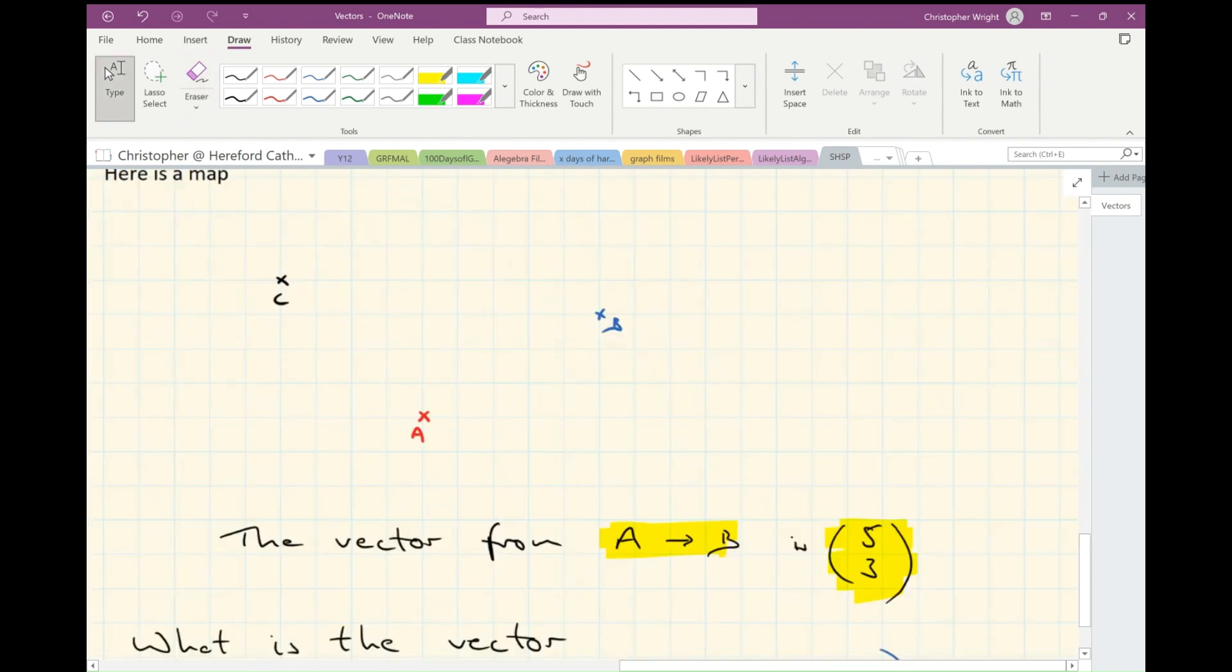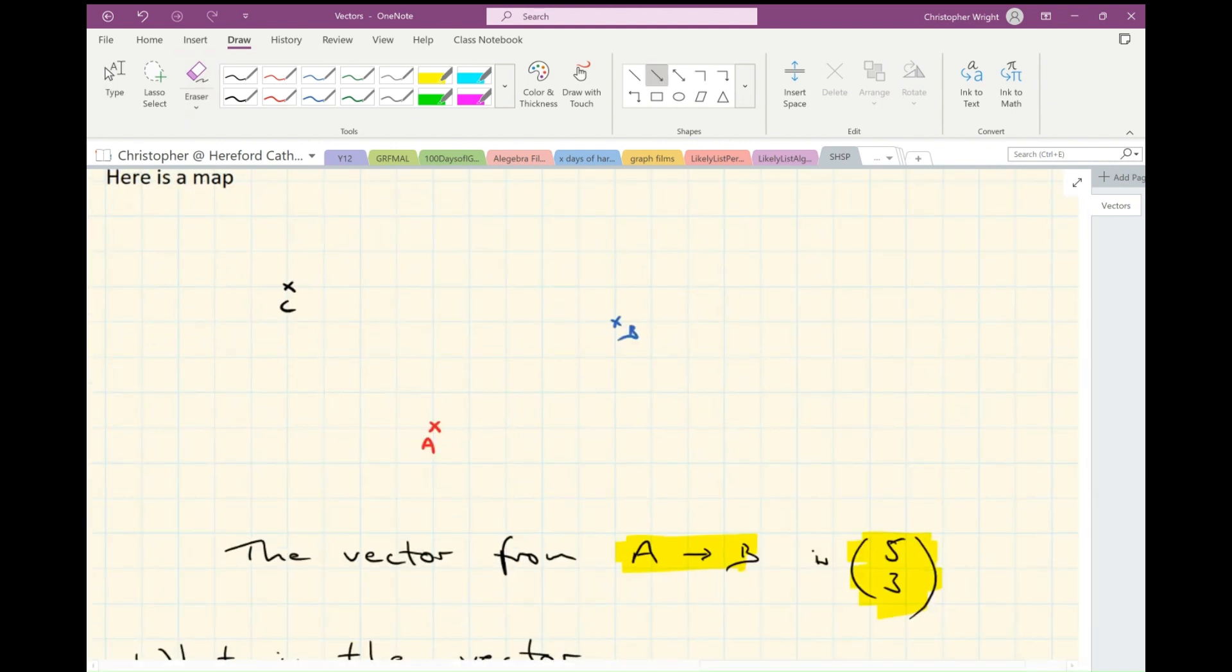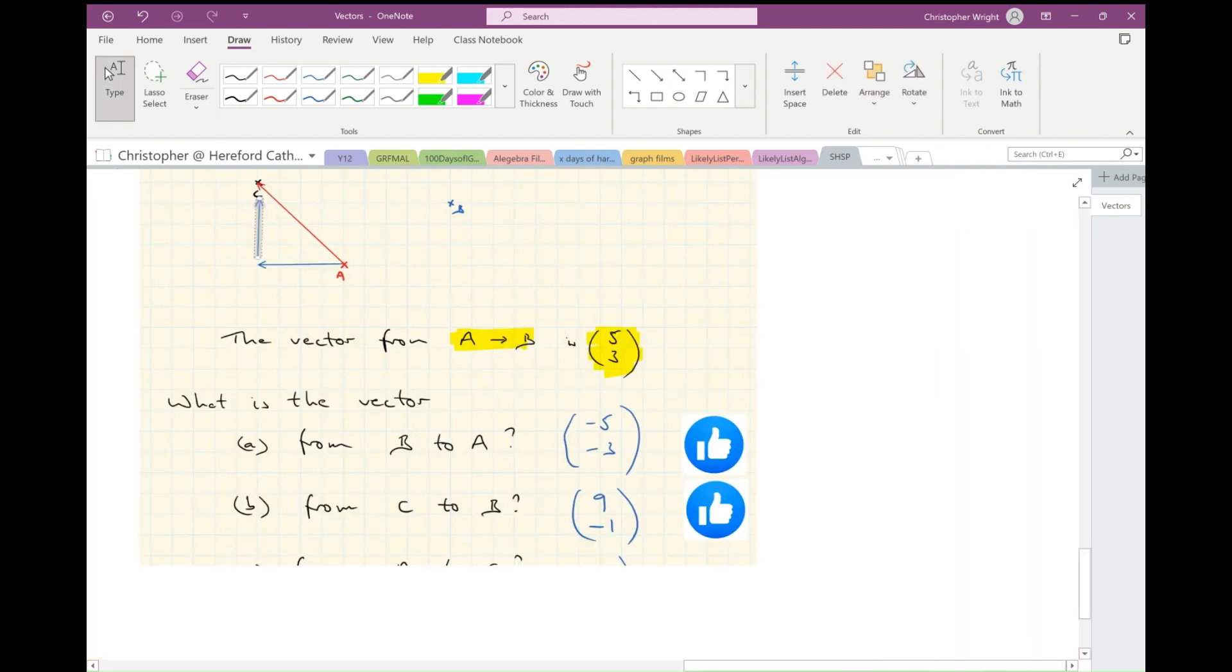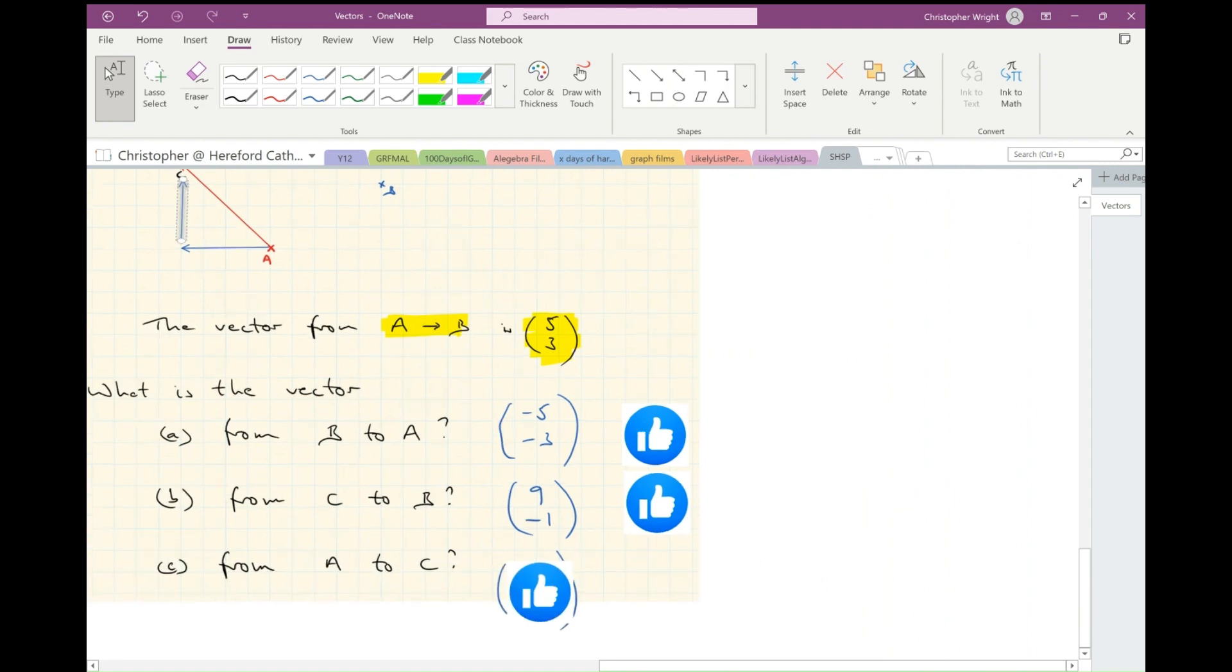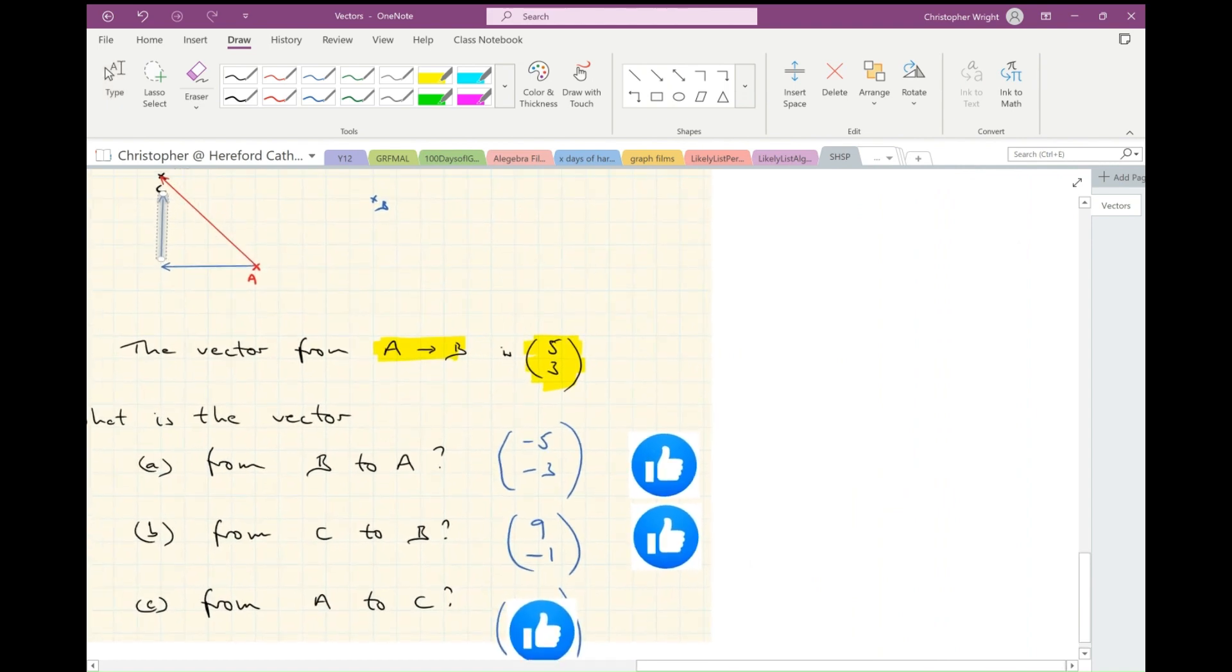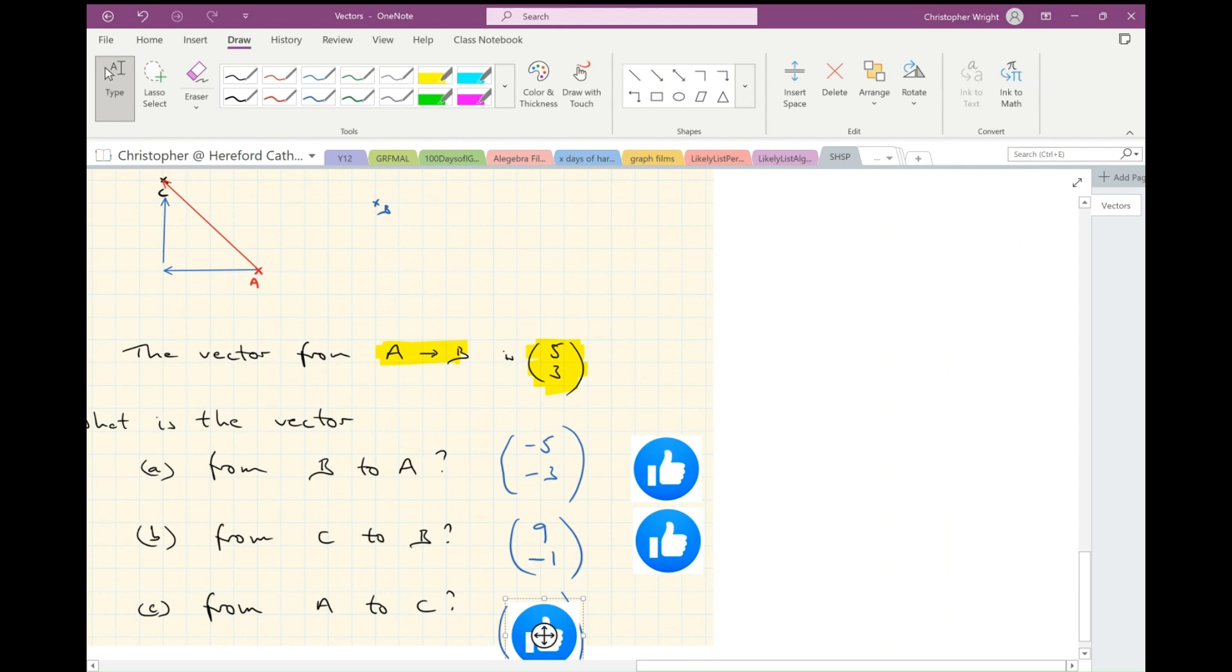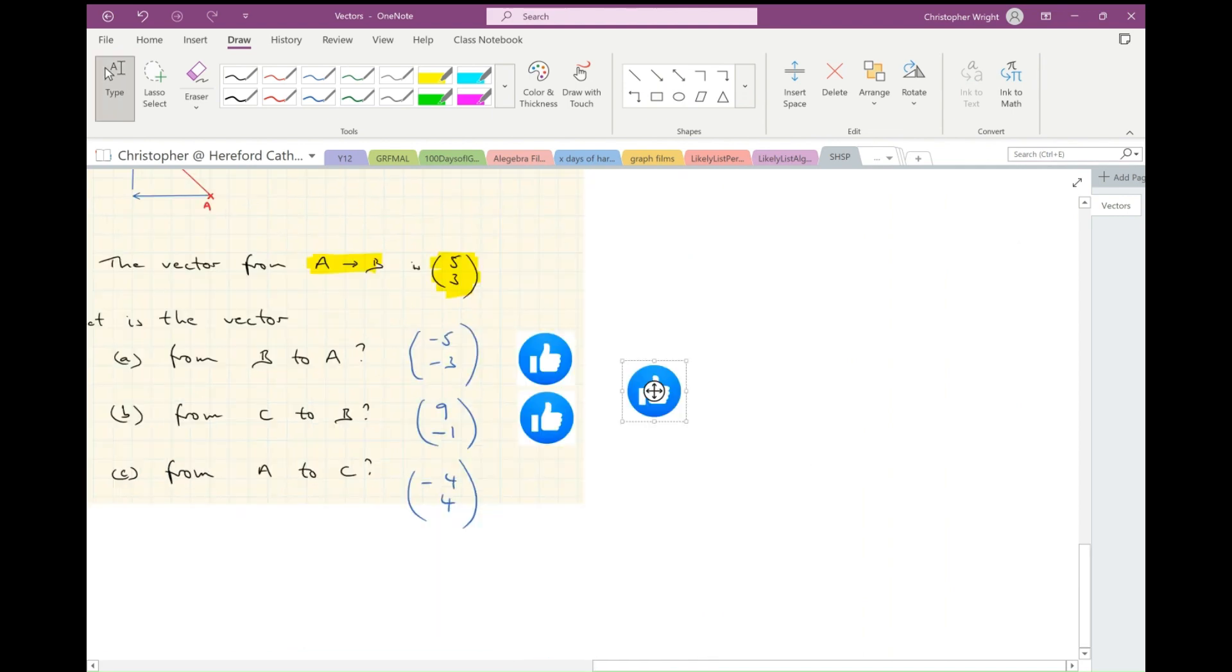Lastly, from A to C. I'm going to start on A and make my way to C. Horizontal first - that's -4 - and then +4. Let's see if we're right. The answer is (-4, 4). Yes, it is.